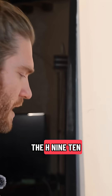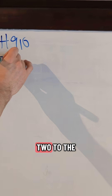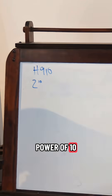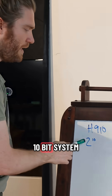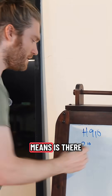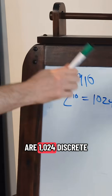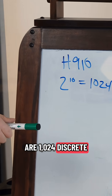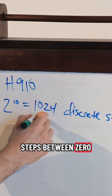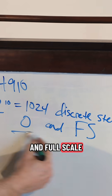Moving back to the H910. The H910 is 2 to the power of 10 — it is a 10-bit system. What that means is there are 1,024 discrete steps between 0 and full scale.